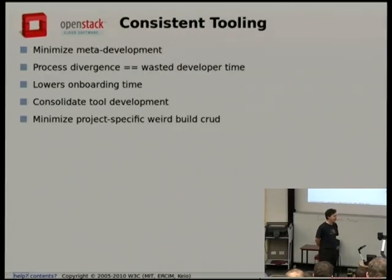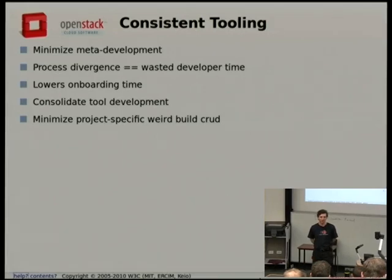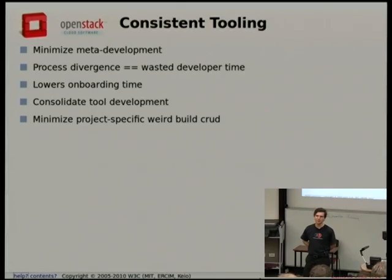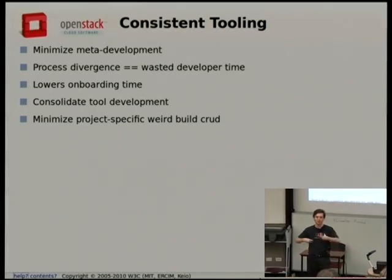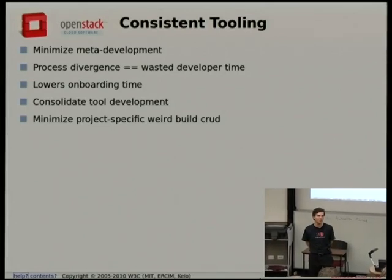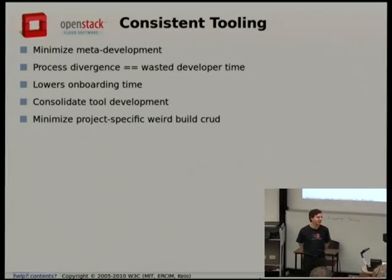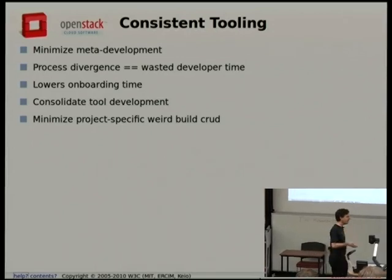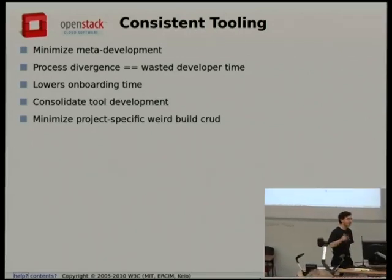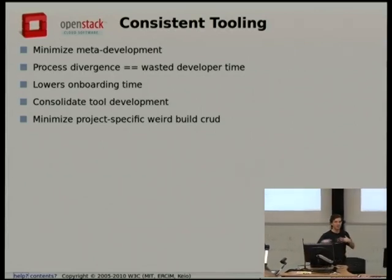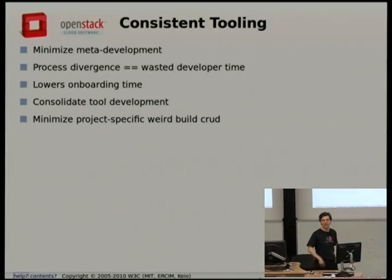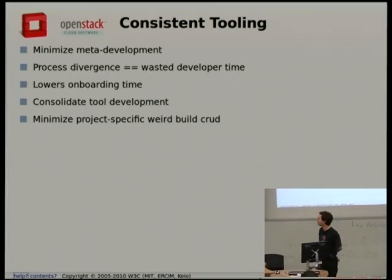That helps get people treating this as a unified global team when the onboarding process for a new developer is the same — no matter what company you're working with, you're going to use the same process and the same tools. The code review process is very important: every patch needs a sign-off from at least two core reviewers on the team. The core review team is actively growing, and that growth is seen as a really important activity for the project.